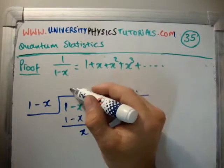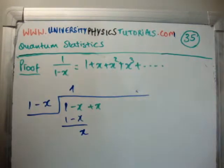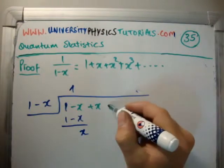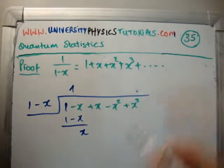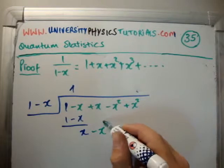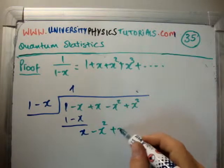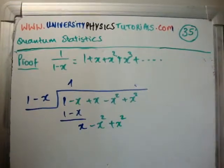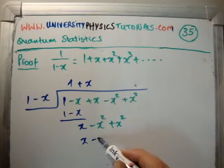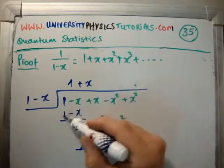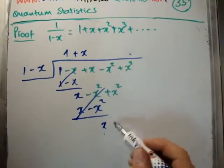So we have 1. Now, this time I'm going to subtract x squared and add x squared. So now I'm going to multiply by x, plus x. So we're going to have x minus x squared. They cancel, leaving us with x squared.